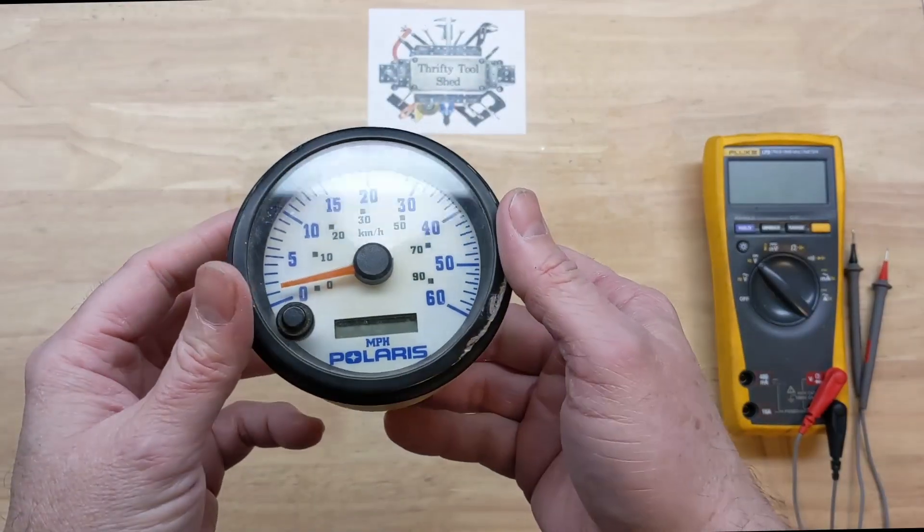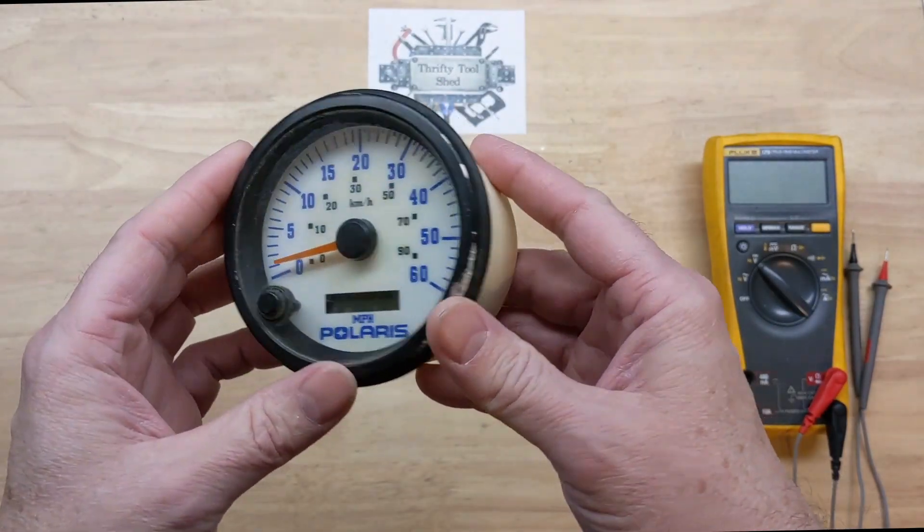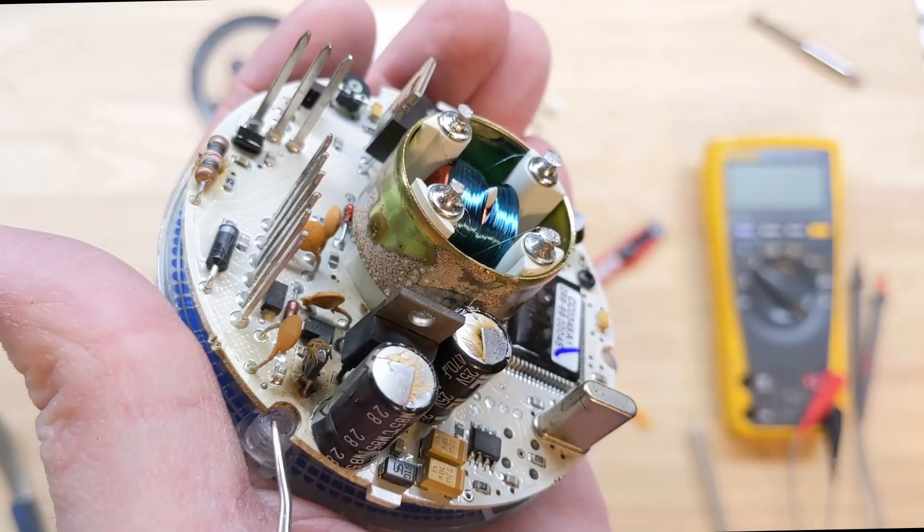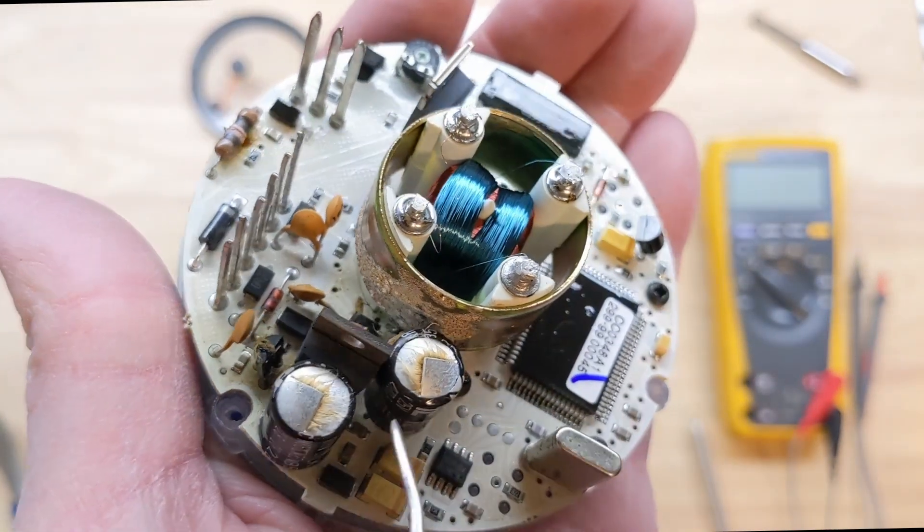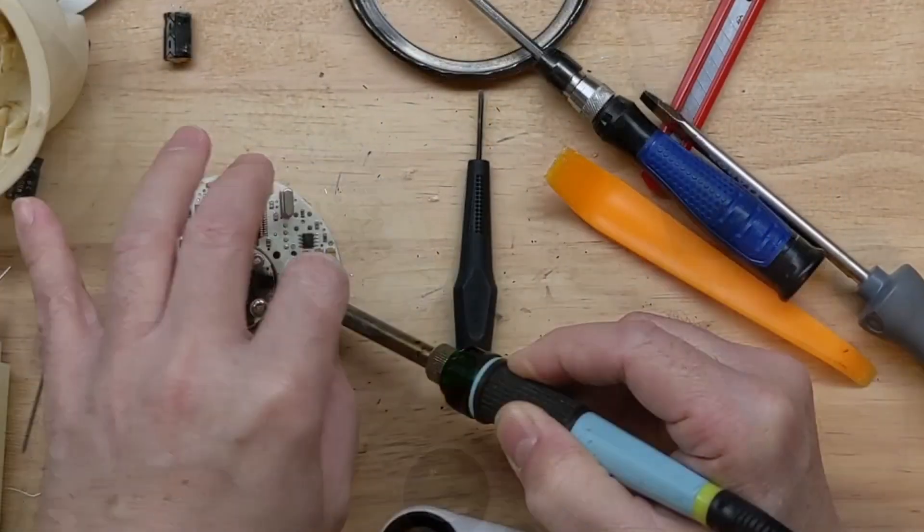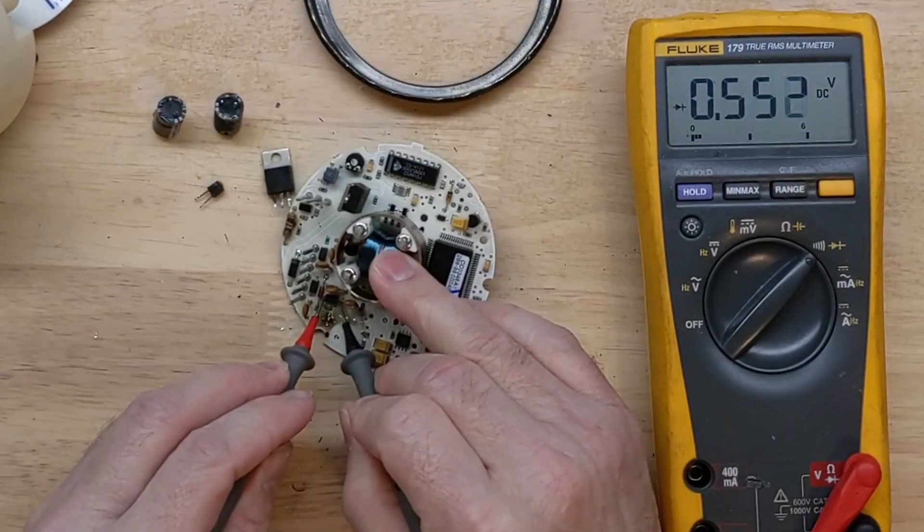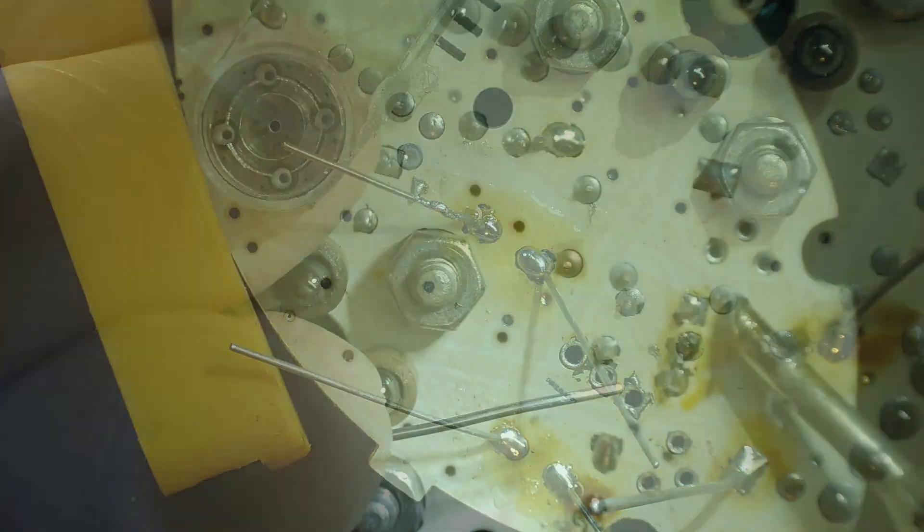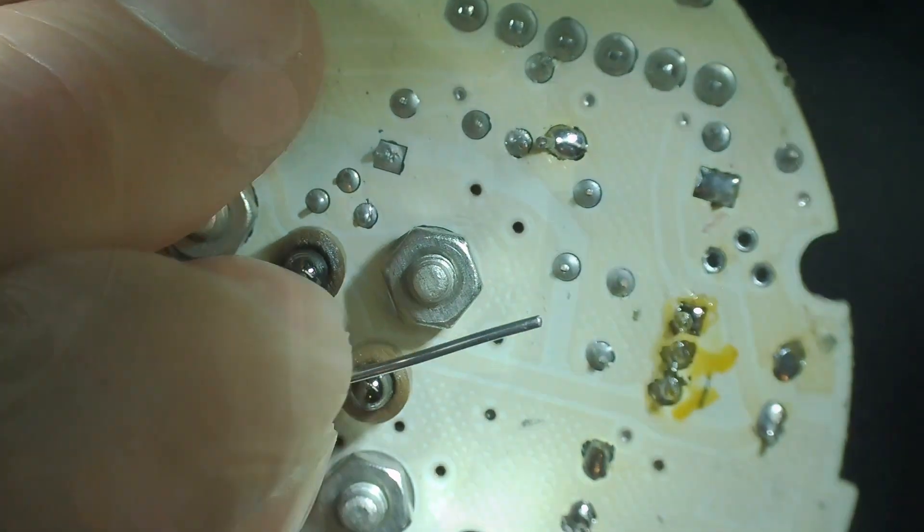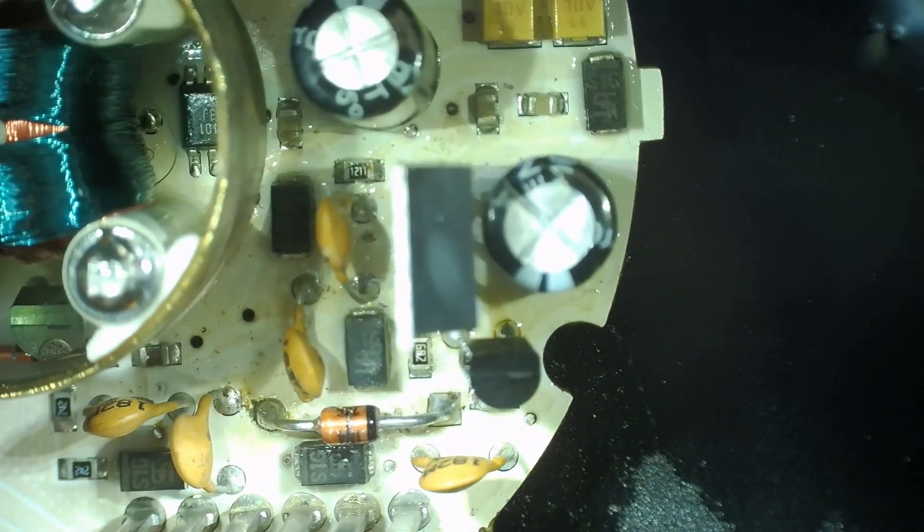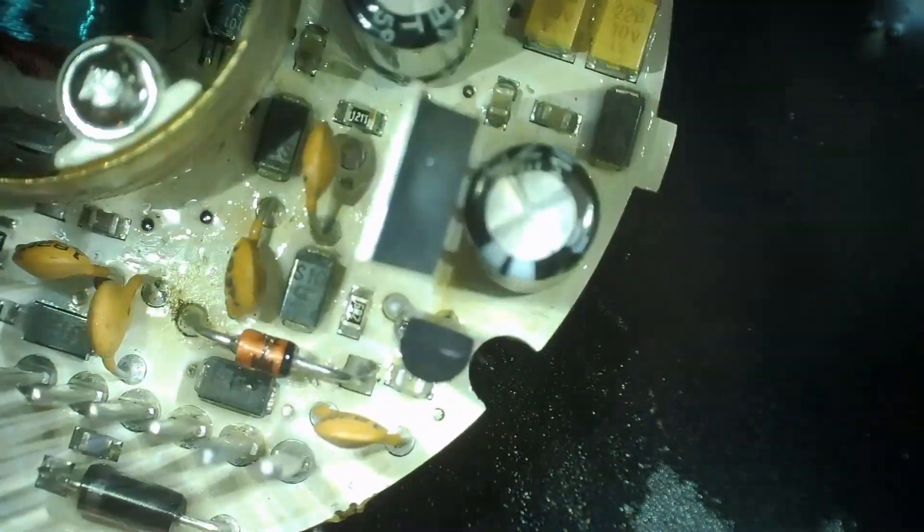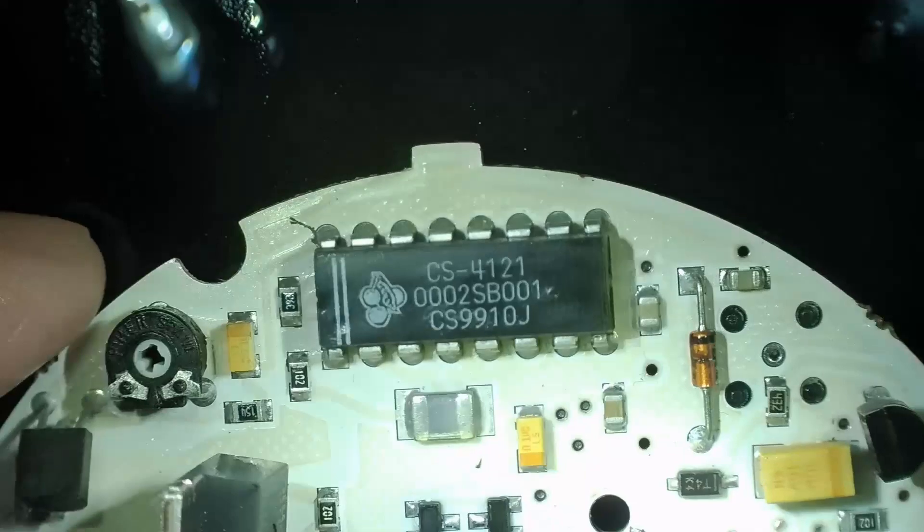In part two of this video on the Polaris speedometer, we're going to look a little deeper. In the first video, we took a look inside and had a lot of bad components - the caps, the transistors, and a lot of failures. We removed components, tested them, sorted our replacement components. Our 15-volt rail was good, but we still weren't getting any power to our CPU or speedometer chip.